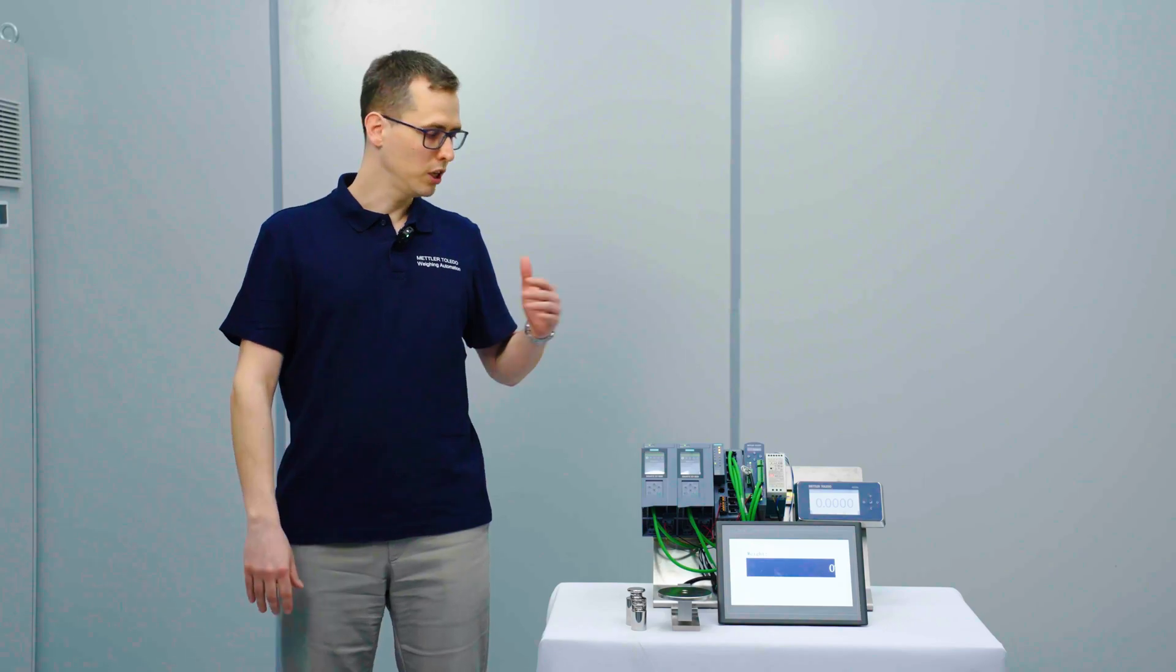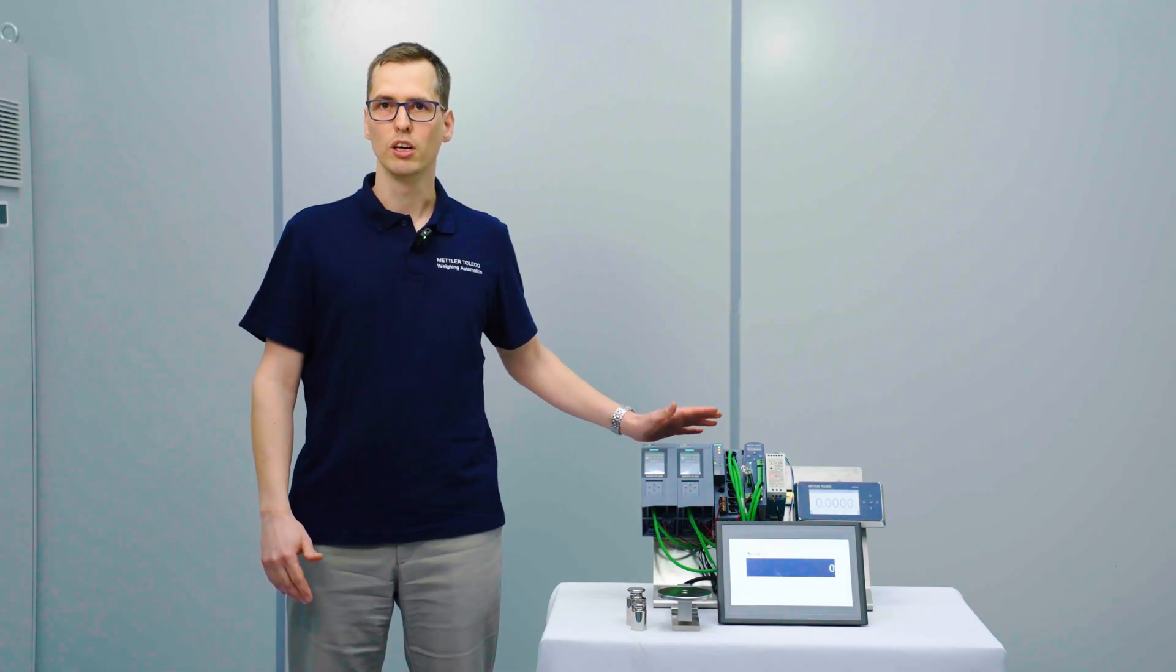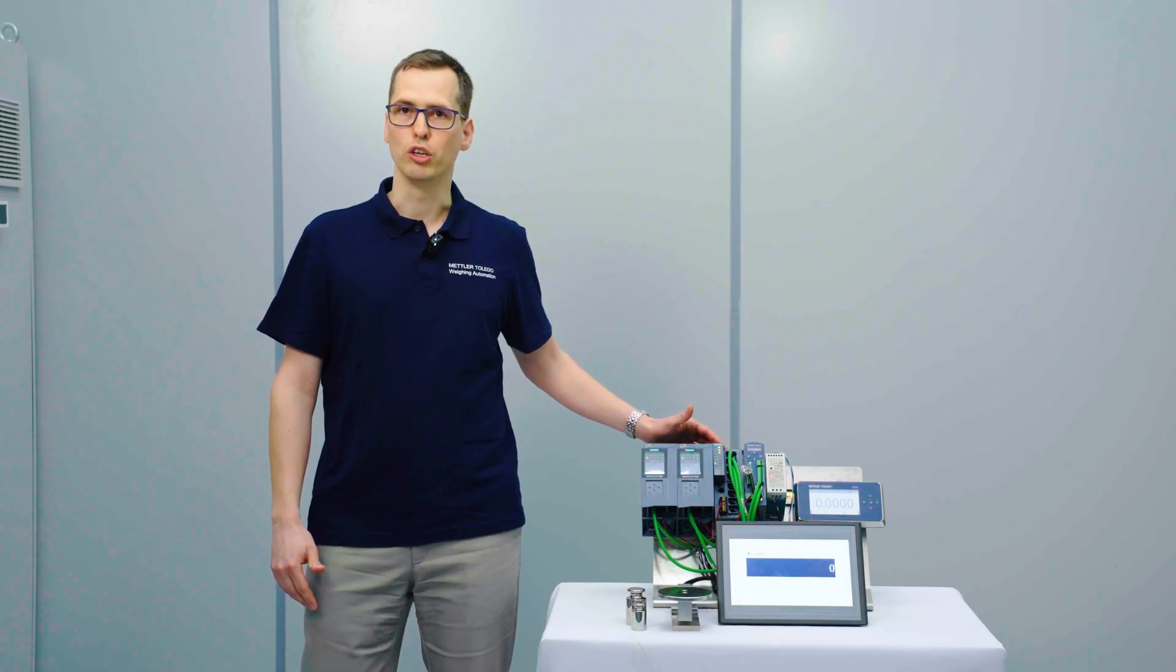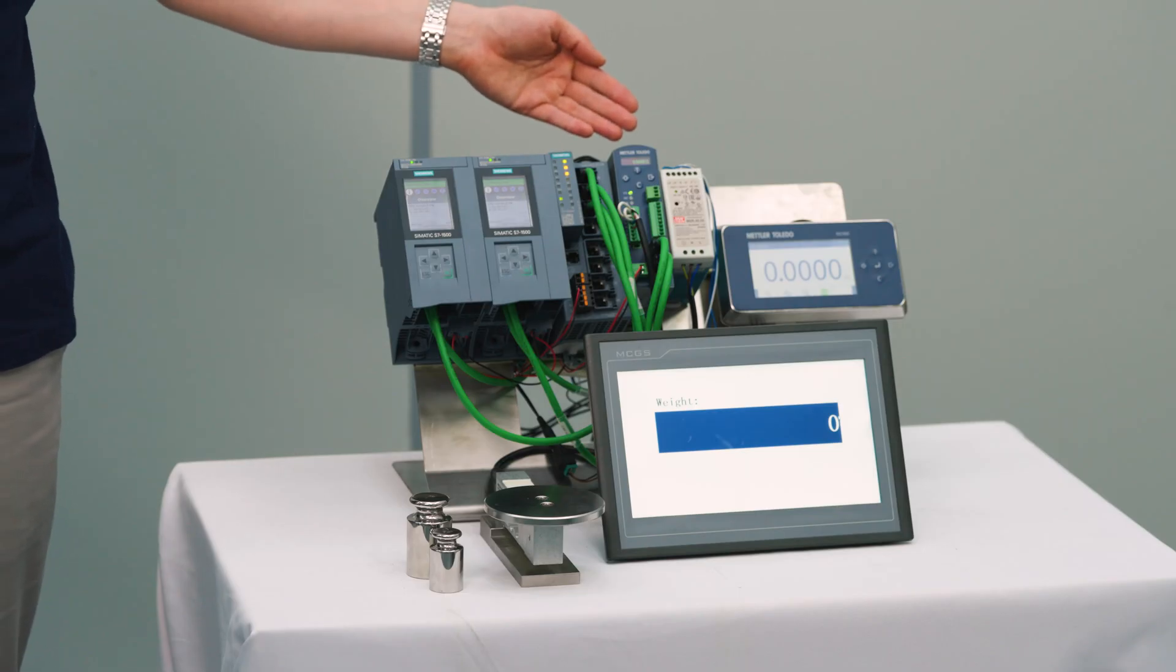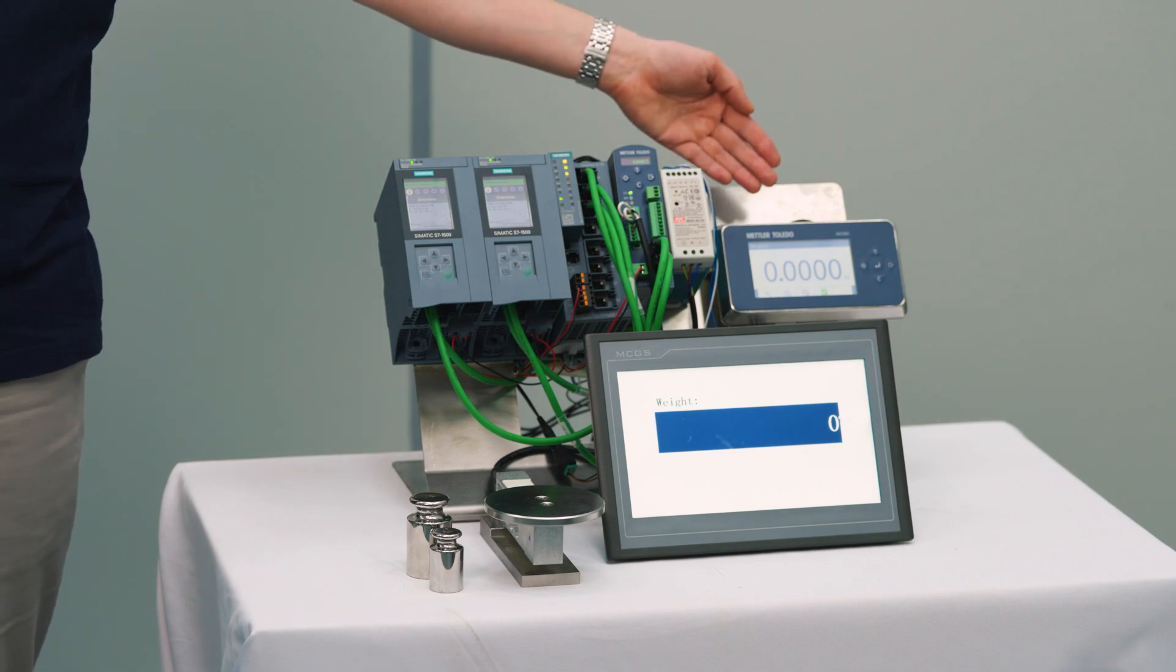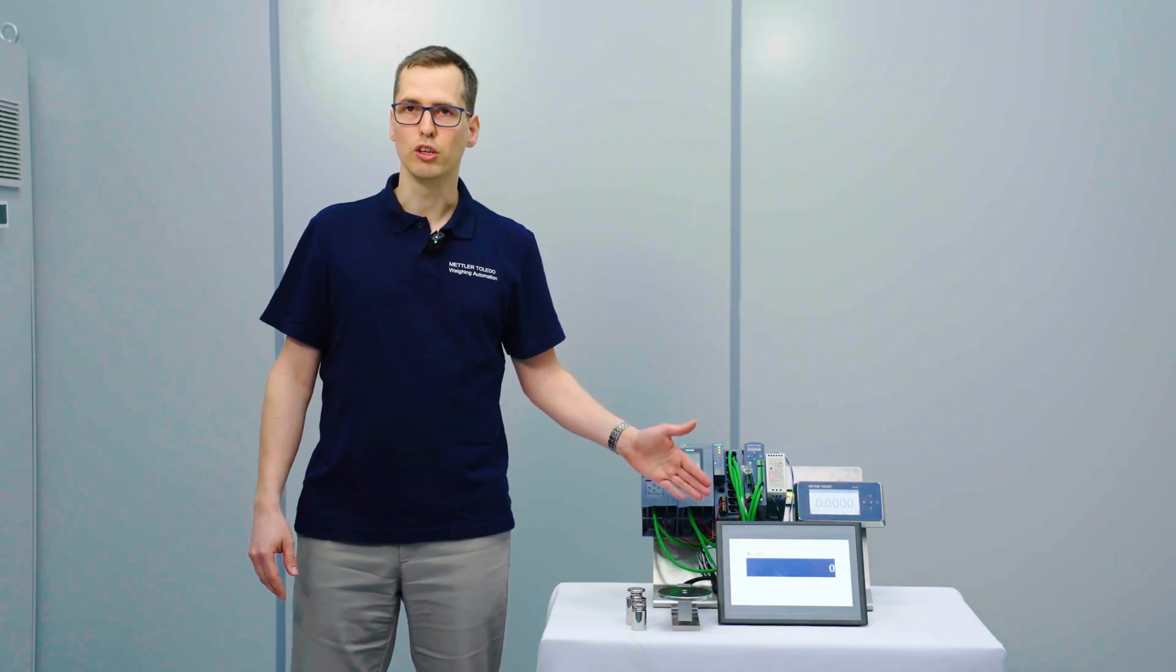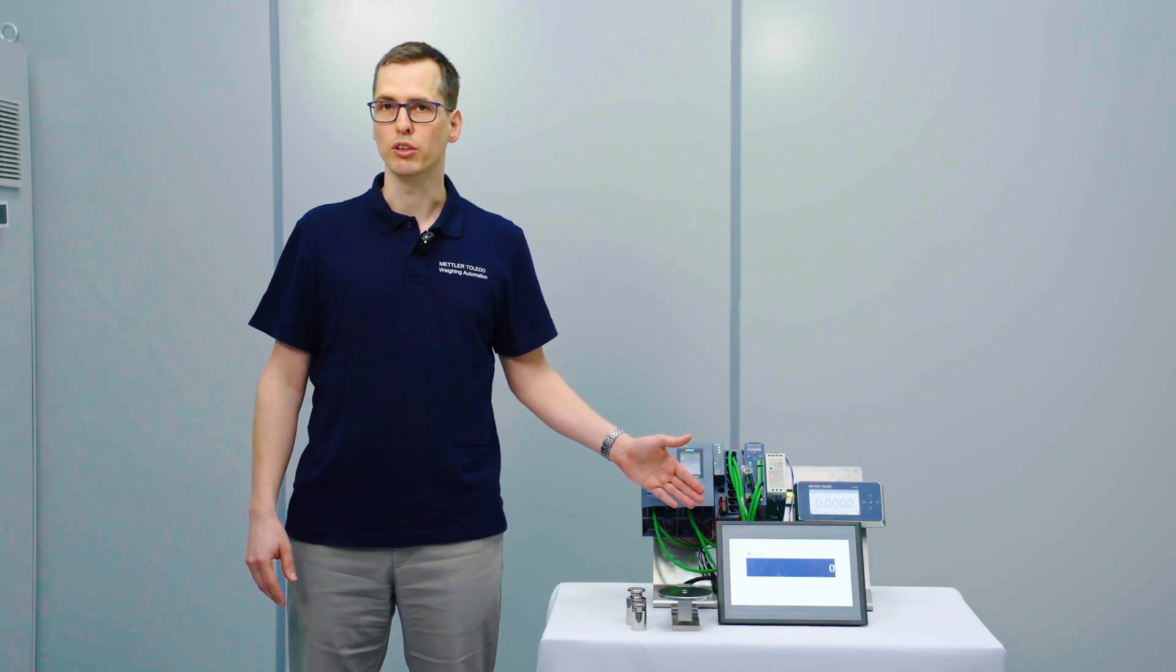For the setup we have two S7 1500 RH controllers from Siemens connected to a network switch. Then we have our IND 360 with S2 redundancy support connected to its display and to our scale. Here we have a power supply as well as a display supporting S2 redundancy.